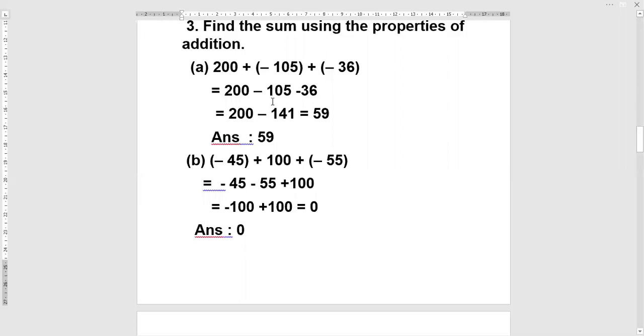Now their same sign, which is negative, will come. Because 105 is a negative integer and minus 36 is also a negative integer. So 200 minus 141. This is equal to 59. It is a positive integer, so answer will also be a positive integer. The answer is equal to 59.